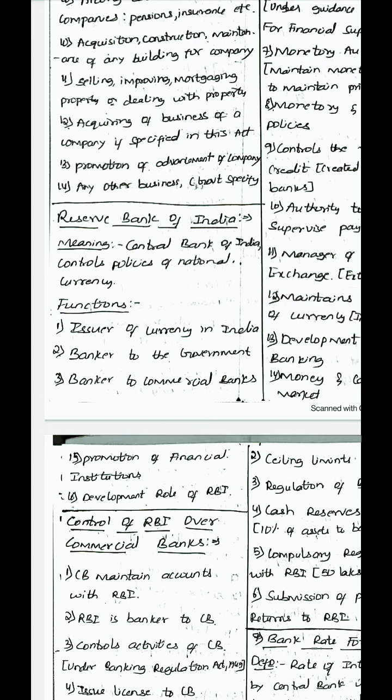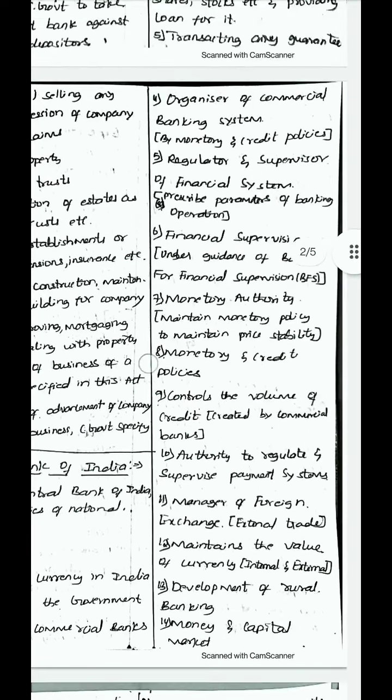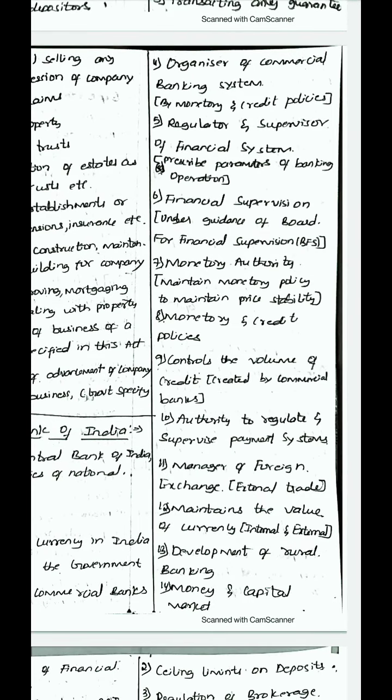The next important concept is the Reserve Bank of India. RBI is the central bank of India which controls the policies of national currency — it basically issues currency. Its functions include: issuer of currency in India; banker to the government, performing banking operations like giving loans and taking deposits; and banker to commercial banks — even commercial banks have accounts with RBI. RBI also organises the commercial banking system by creating monetary and credit policies.